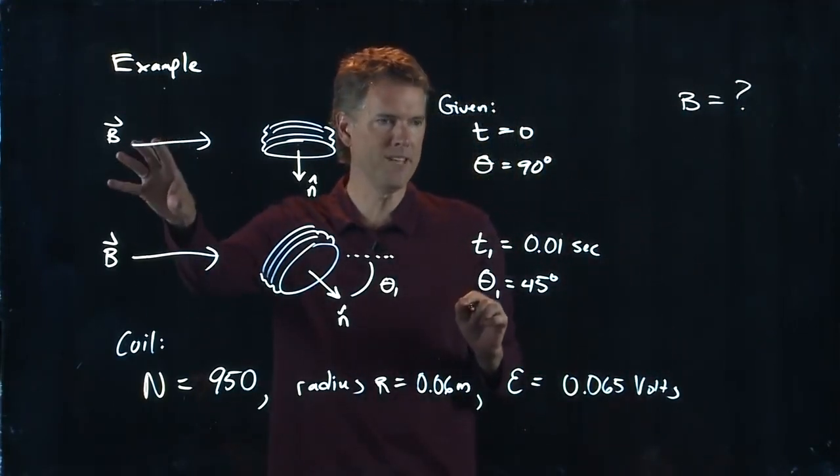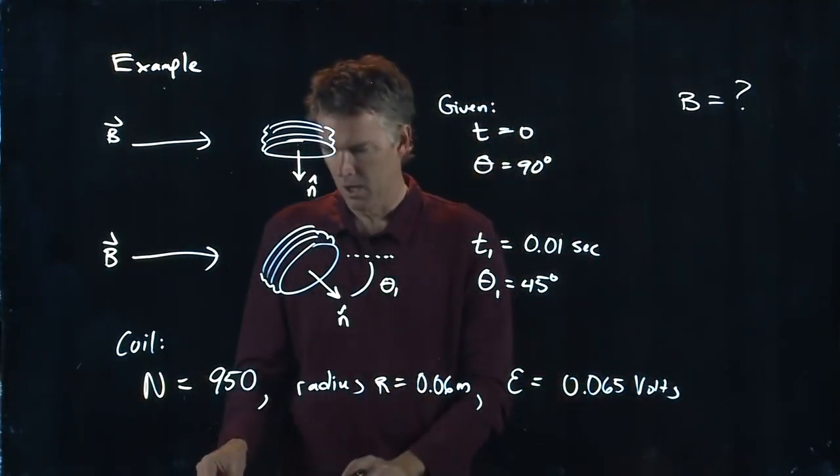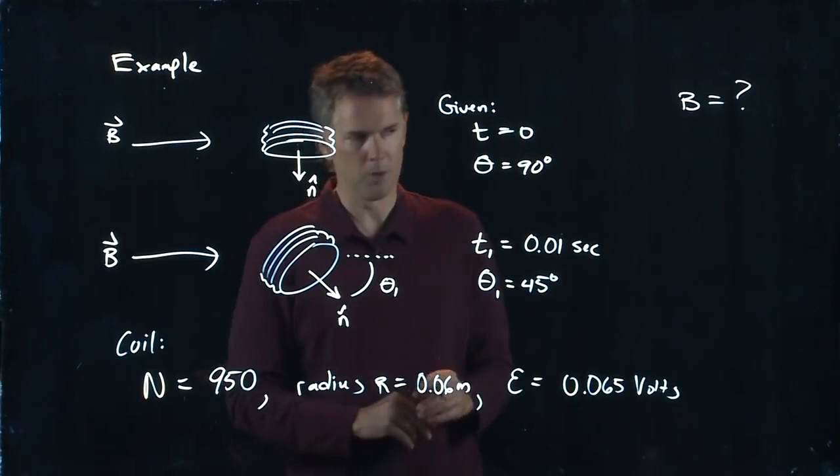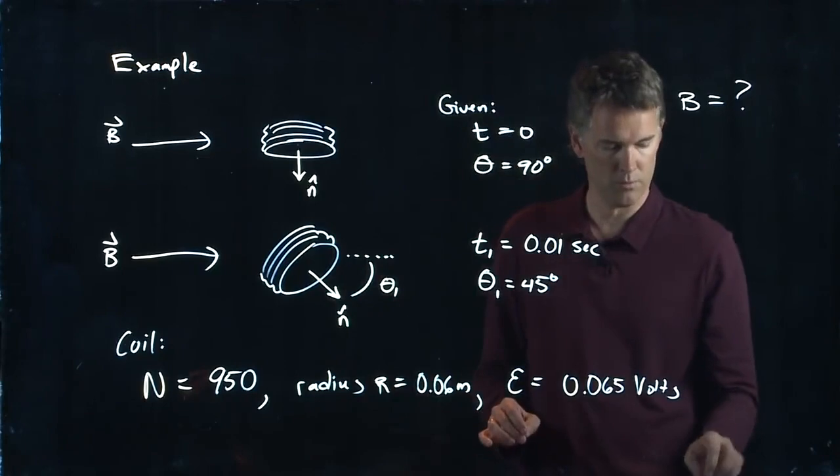This is all the information that we're given. Let's say that we are looking for B - what is the strength of the B field that's going to generate these results?